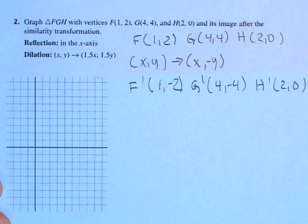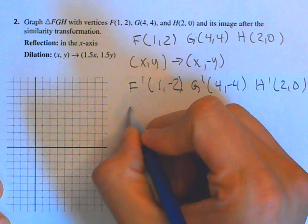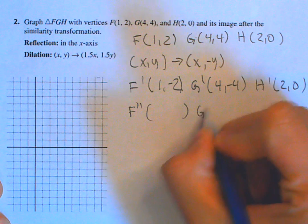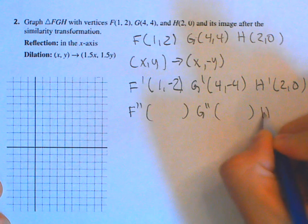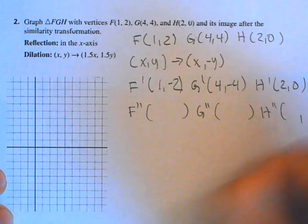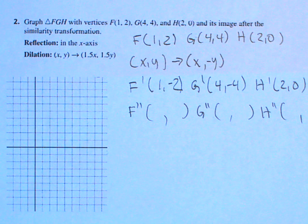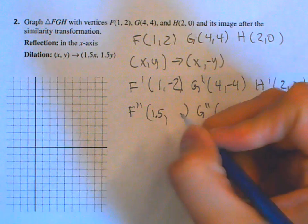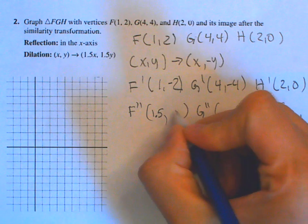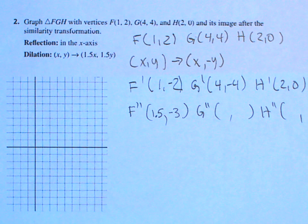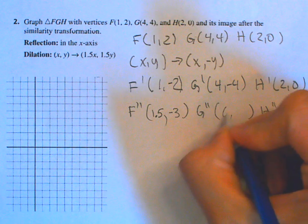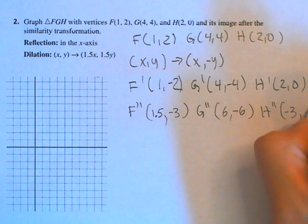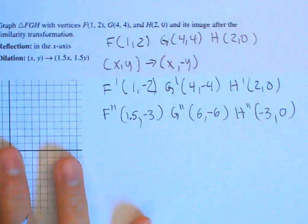Now we're going to dilate all of these by multiplying by 1.5. So F double prime: 1 times 1.5 is 1.5, 2 times 1.5 is negative 3, giving (1.5, negative 3). G double prime: 4 times 1.5 is 6, giving (6, negative 6). H double prime: 2 times 1.5 is 3, giving (3, 0).